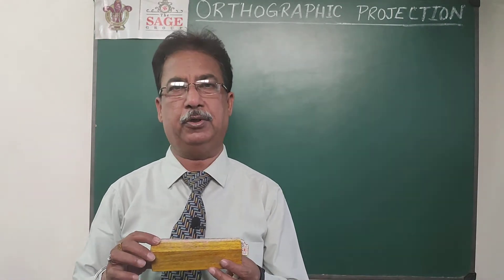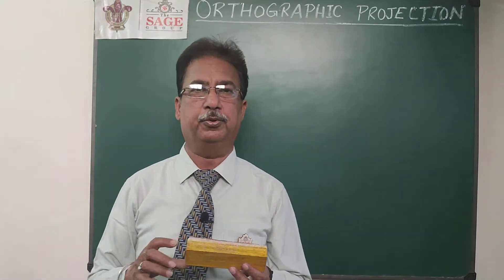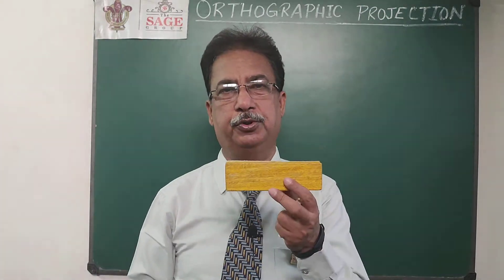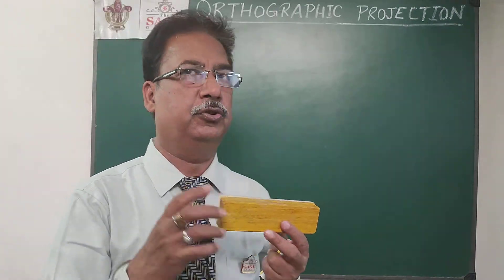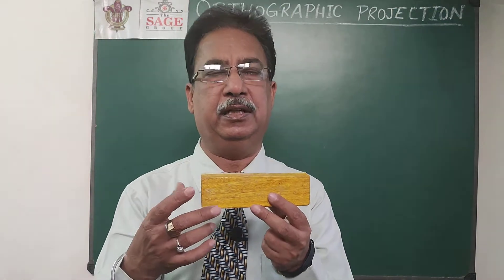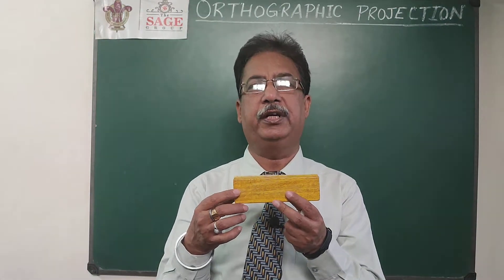Technically, projection can be defined as follows: suppose there is an object — I have this duster with me — and I want to project this object onto this plane. The method is to draw straight lines from all the corners of any given object onto a plane, and then drawing all those points in the same sequence as they are in the object. The figure obtained is known as the projection of that object on that plane.